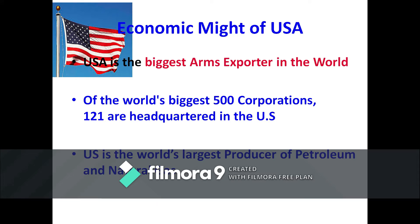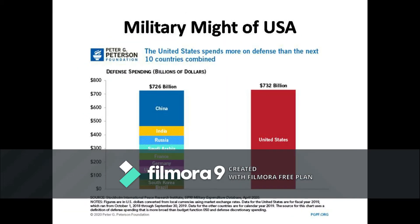This tells us that the economic might of the United States is not to be undermined in any way. And now comes the military might of the US. The chart shows that the United States spends more on defense than the next 10 countries combined — China, India, Russia, Saudi Arabia, France, Germany, United Kingdom, Japan, South Korea, and Brazil — put together, spending annually $726 billion, while the US spends $732 billion.